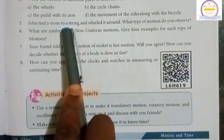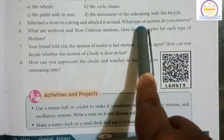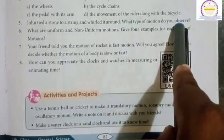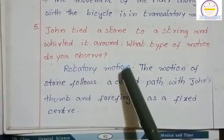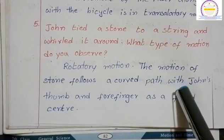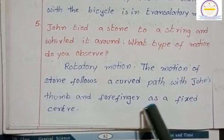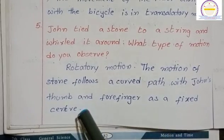Fifth question: John tied a stone to a string and whirled it around. What type of motion do you observe? We observe rotatory motion. The motion of stone follows a curved path with John's thumb and forefinger as a fixed center.